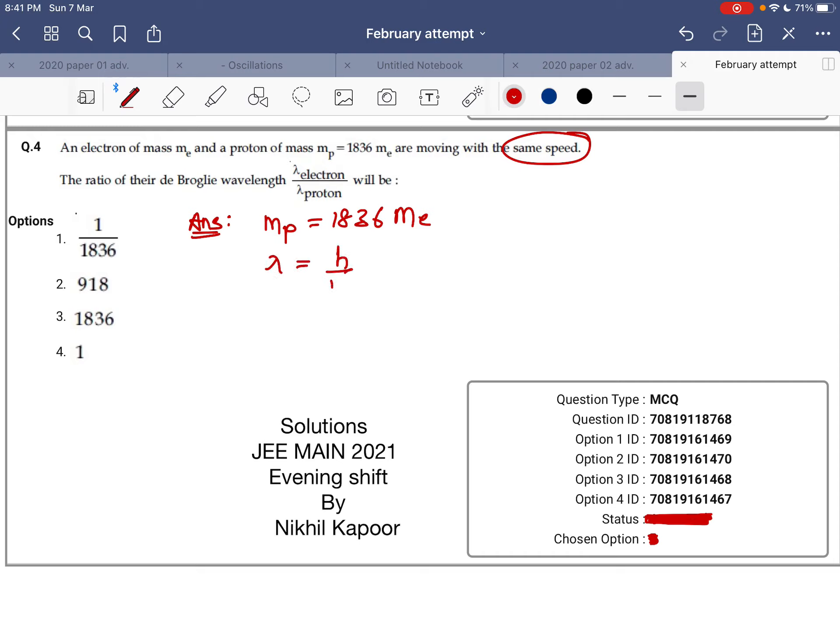The de Broglie wavelength is given by H upon Mv. The lambda of electron upon lambda of proton would be equal to H upon mass of electron into speed of electron, whole divided by H upon mass of proton into speed of electron.